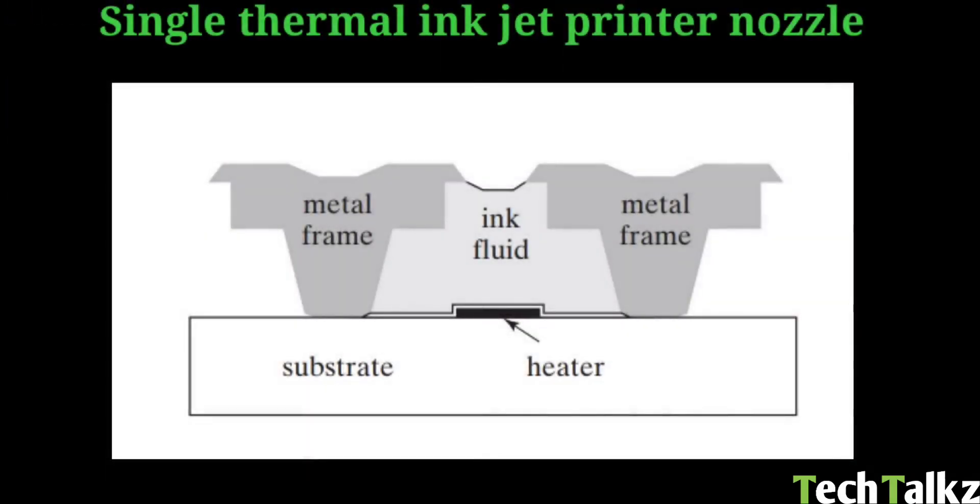Now for example, we use the inkjet printer. The ink droplets are ejected based on the thermal expansion of liquid inks. This is the schematic diagram of a single thermal inkjet printer nozzle. It consists of a fluid chamber with an opening, and a micro heater is embedded on the substrate within the cavity.